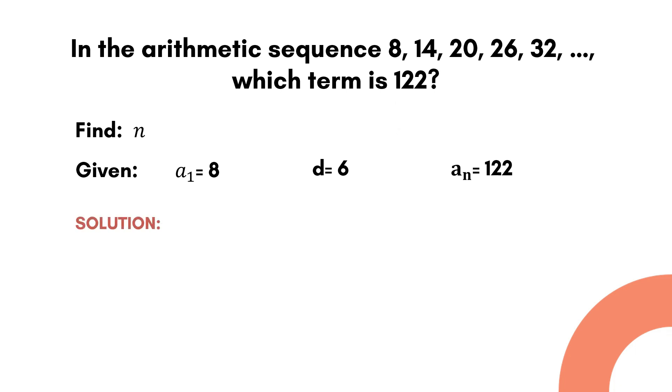Let us solve for n. First, copy the formula in finding the nth term of an arithmetic sequence. Second is to substitute the values from the given. The next thing to do is to simplify this by using distributive property. Distribute 6 to n minus 1. There we have the answer of 122 is equal to 8 plus 6n minus 6.